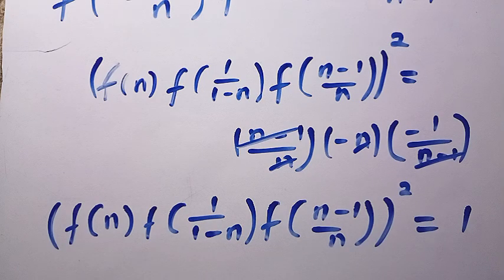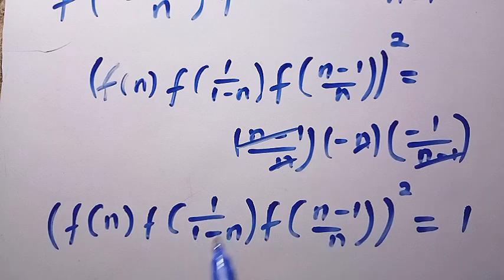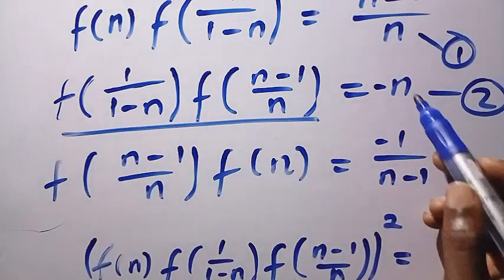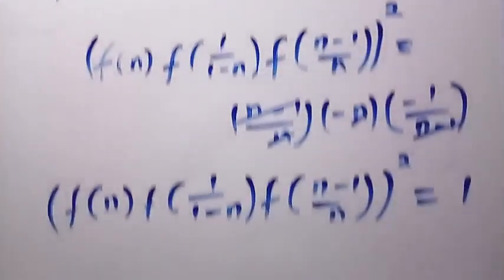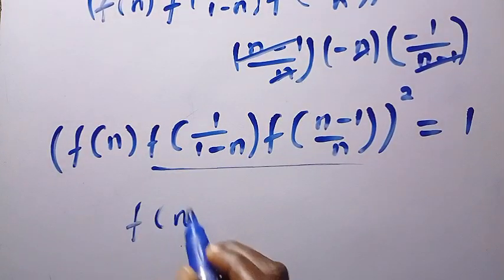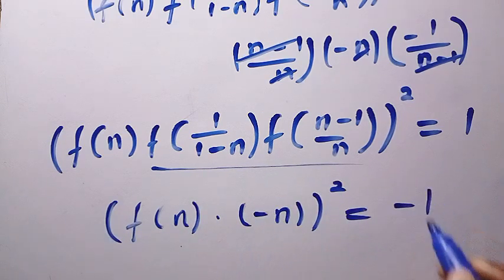When we take the square root of both sides, we get plus or minus 1. Since we need to find f(n) as general values, let's look at what we have. From Equation 2, f(1/(1 minus n)) times f((n minus 1)/n) equals n, which we note equals minus n with a sign correction. So by substituting back, we have f(n) times (minus n) raised to the power 2 equals 1.